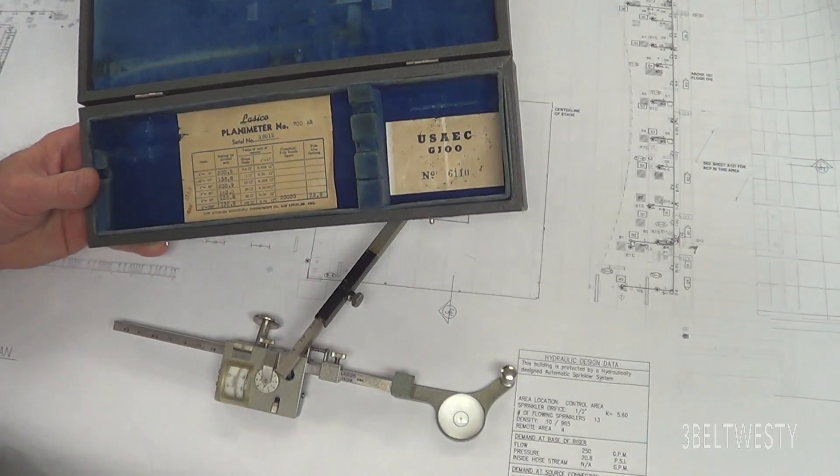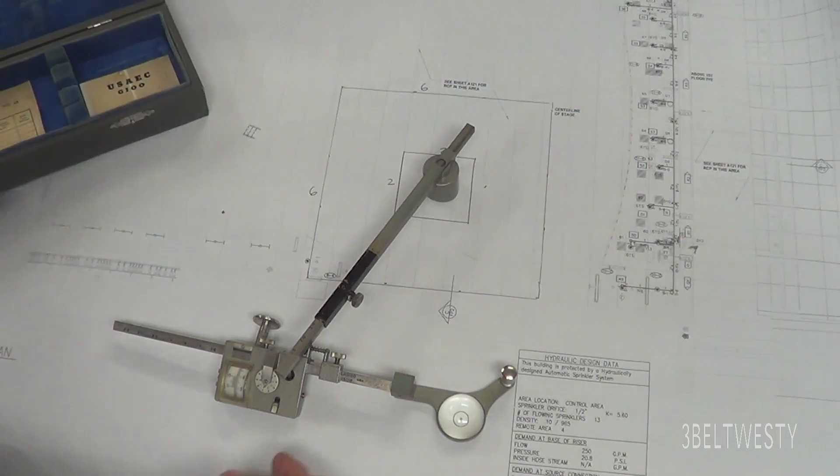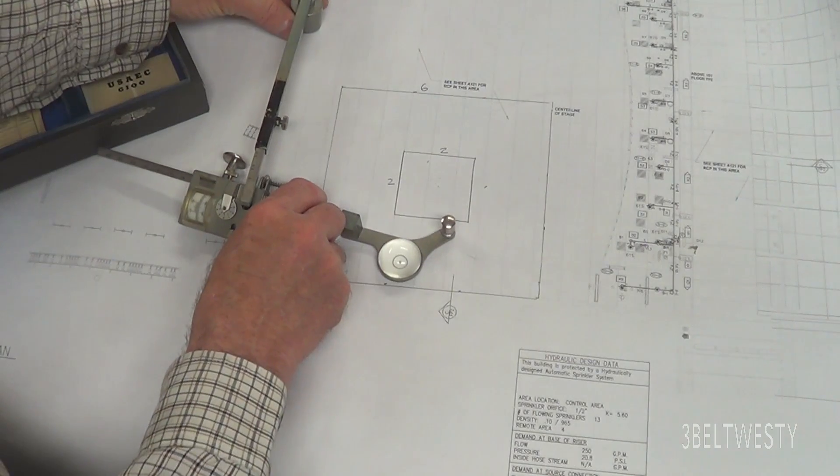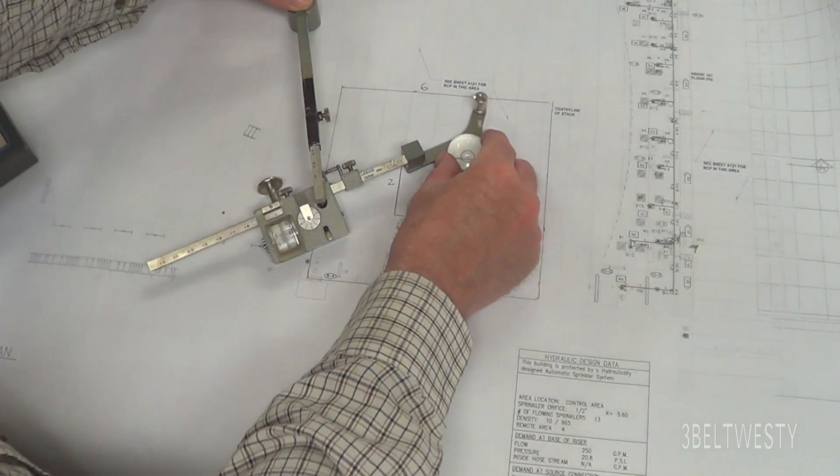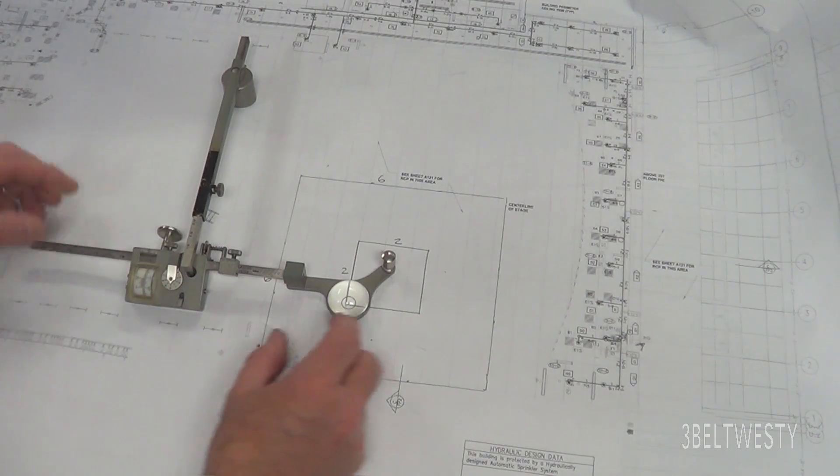Generally, on a planimeter like this, they don't always tell you what the constants are. You may have to figure that out. The general configuration is you have the pole outside the figure.